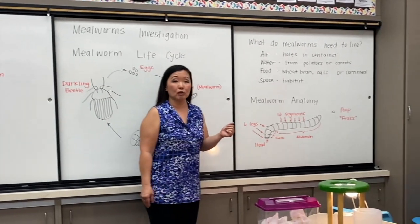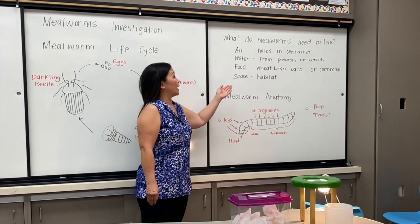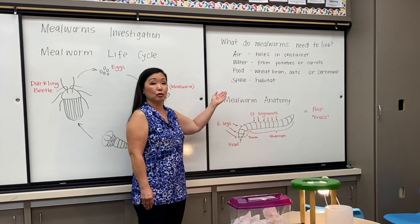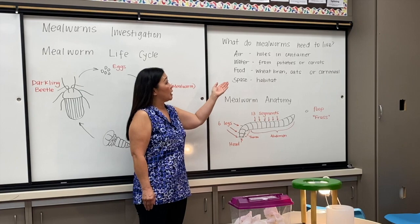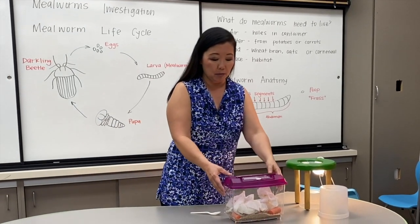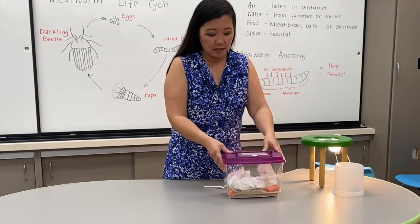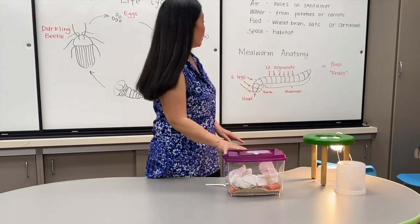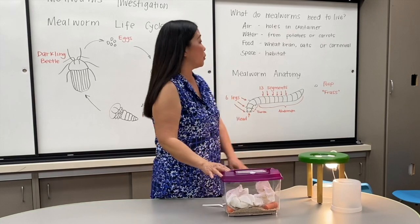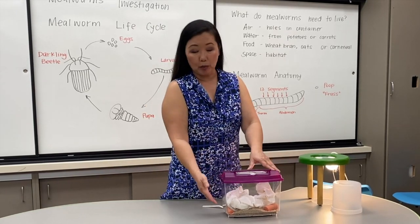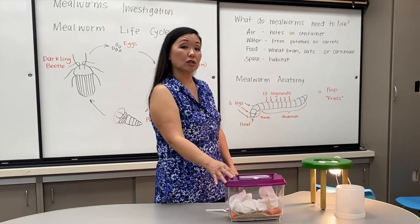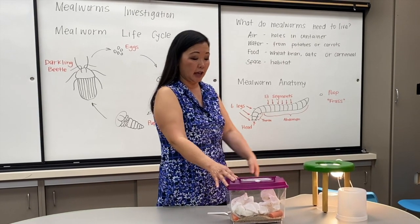What do mealworms need to live? They need the same things as other animals: air, water, food, and space. I have a container here for my mealworms. It has air, water in the carrots — they don't need a whole lot of water — food, which is the wheat bran on the bottom, and you could use oats or cornmeal also, and space.